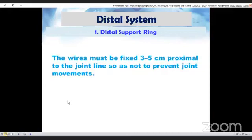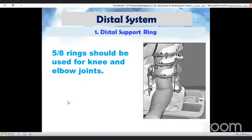The wires must be fixed three to five centimeters proximal to the joint line so as not to prevent joint movements. Near the knee and elbow, five-eighths rings should be used to allow free mobility.